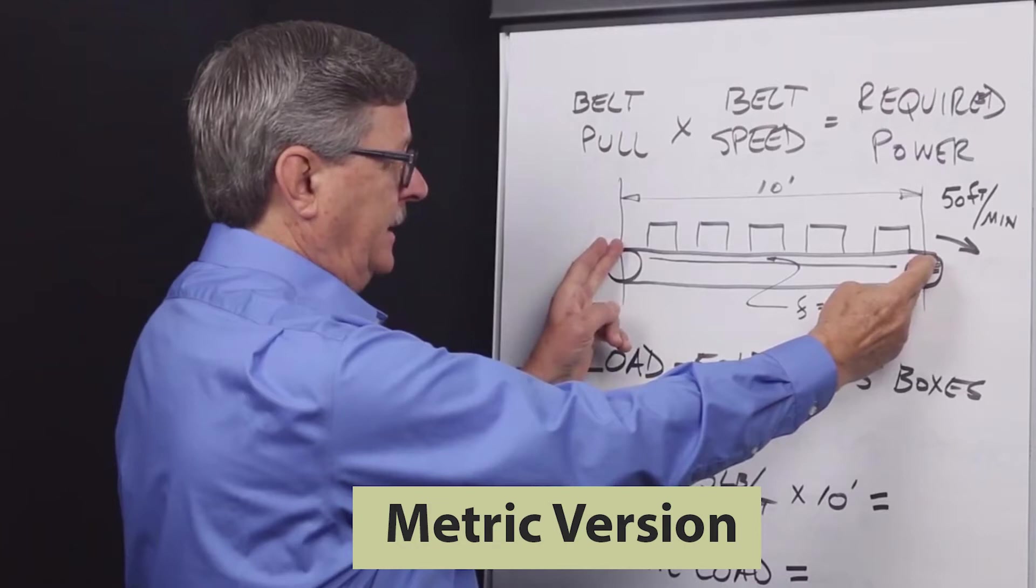Therefore if we say that the belt pull, which is a force that is required to overcome the friction of a slider bed to move a box of a certain mass horizontally at a certain speed, we need to convert the mass of the box into the weight of the box at the earth's surface and then apply the frictional coefficient to determine the belt pull.